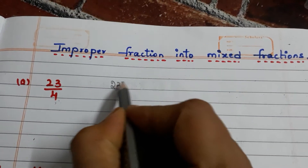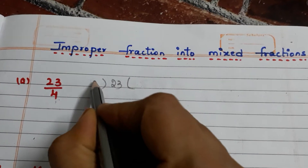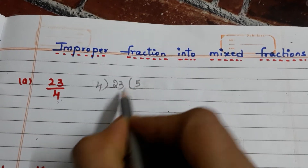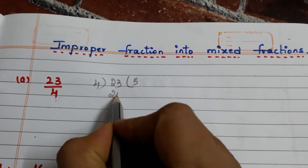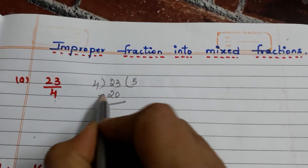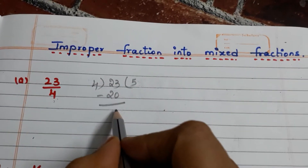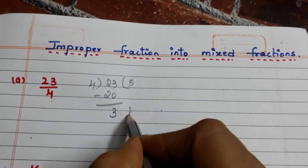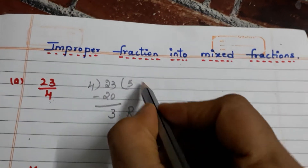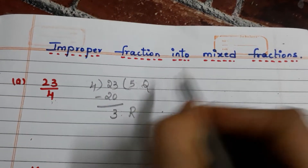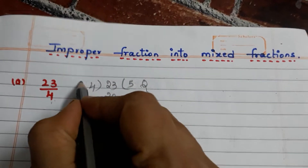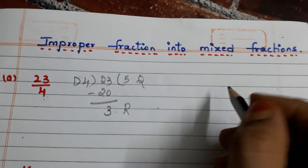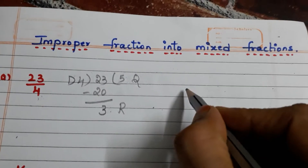We are dividing 23 with 4. 4 times 5 is 20. 23 minus 20 is 3. We all know that this is the remainder, this is the quotient, and this is the divisor. Now we have to write the mixed fraction.